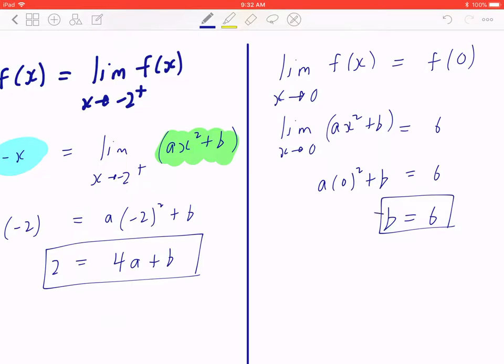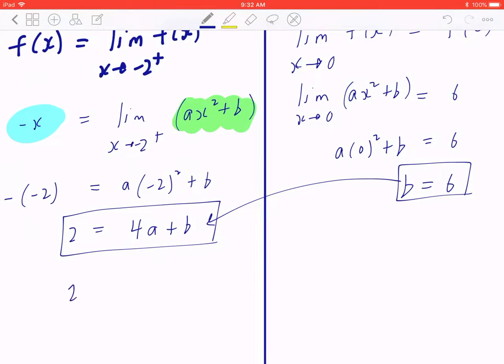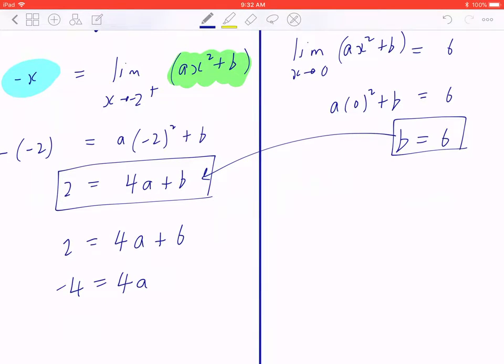So you take that, you plug it back in. This implies that 2 equals 4a plus 6. The opposite of adding 6 is to subtract 6. 2 minus 6 is going to be negative 4, which equals 4a. The opposite of multiplying by 4 is to divide by 4. This means a is going to be negative 1.